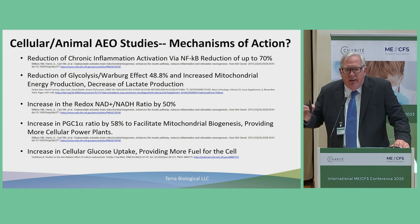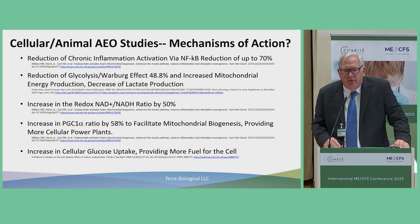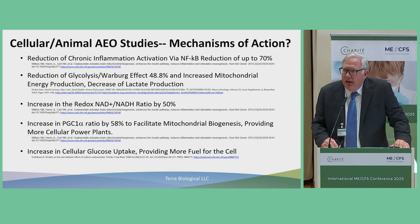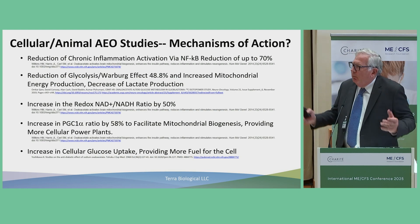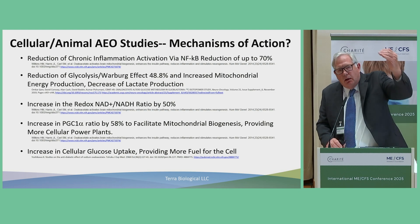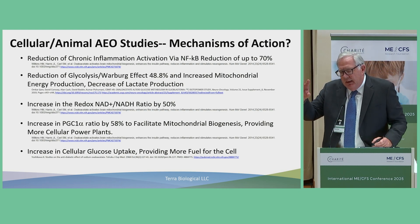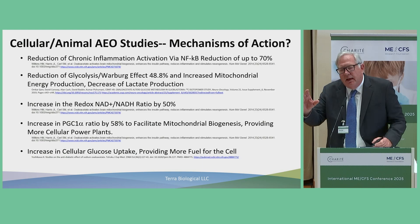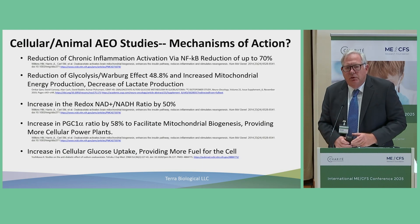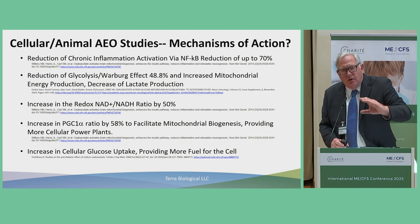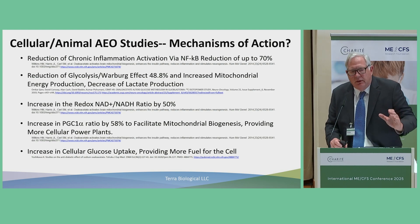Oxaloacetate can turn down that chronic inflammation by about 70%. We also see a reduction of the Warburg effect. Otto Warburg saw glucose coming into the cell being fermented in the cytoplasm instead of being pushed to the mitochondria. In the last five years, it's been shown that oxaloacetate in the cytosol can reverse the Warburg effect, which is really exciting.